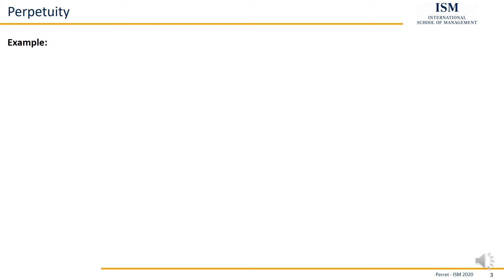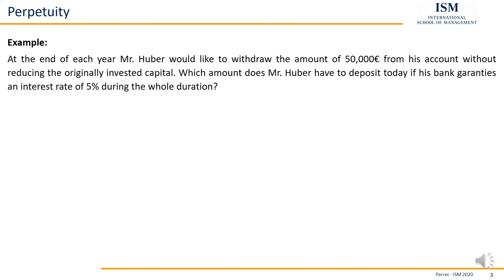Let's do a quick example. At the end of each year, Mr. Huber would like to withdraw 50,000 euros from his account without reducing the originally invested capital. Which amount does Mr. Huber have to deposit today if his bank guarantees an interest rate of 5% for the whole duration? First, we can remark that he withdraws at the end of each year, so it's an immediate payment plan. And since he does not want to reduce the originally invested capital, it's about a perpetuity. So we have to work with the formula for perpetuity immediate.